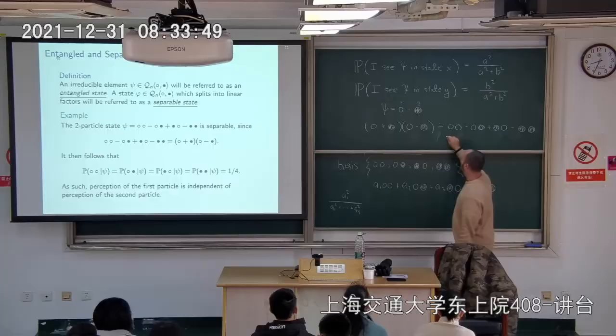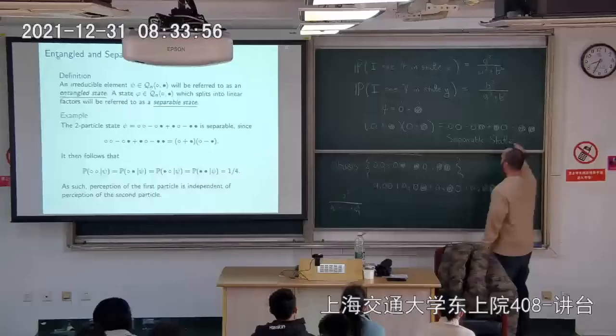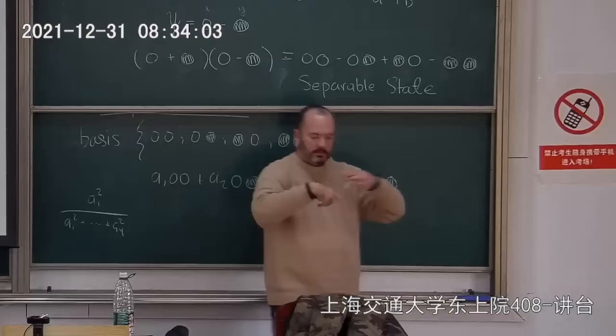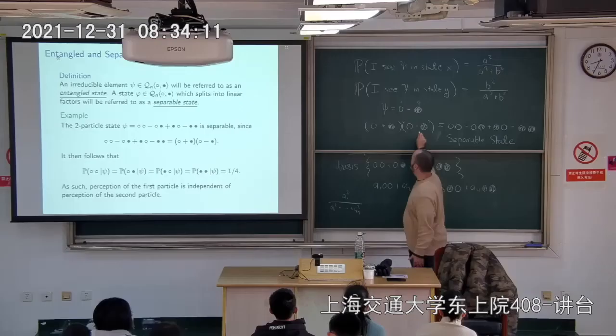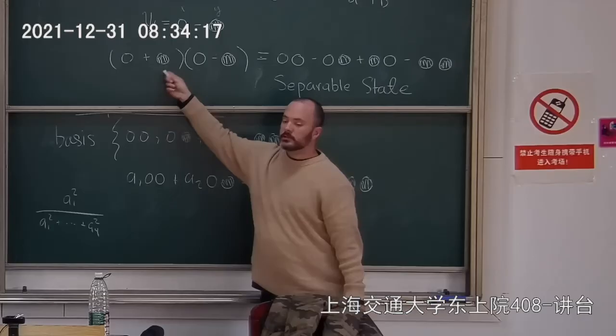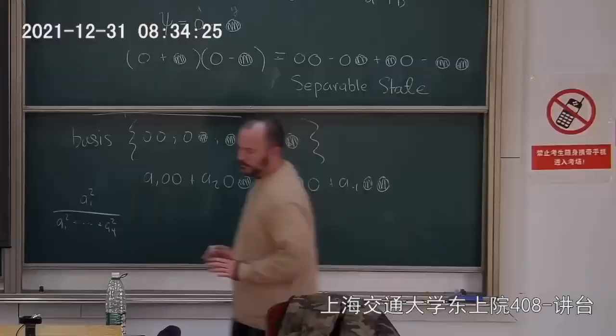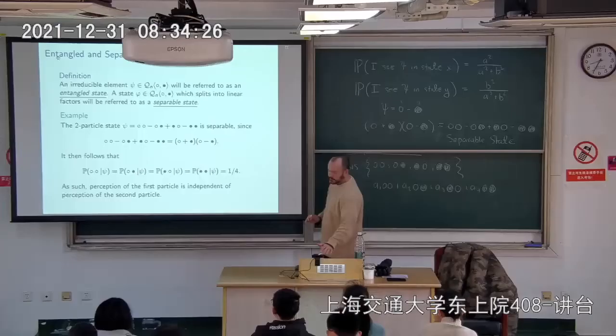A separable state means the measurements of the first and second particles have nothing to do with each other. If I can factor a degree-two state into two degree-one factors, it's separable. If I can't factor it at all, it's called entangled.